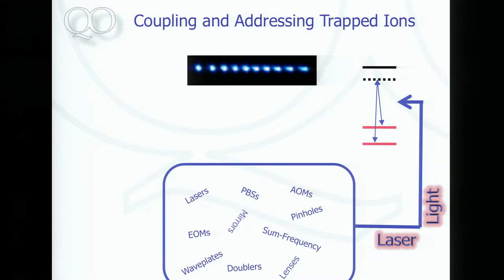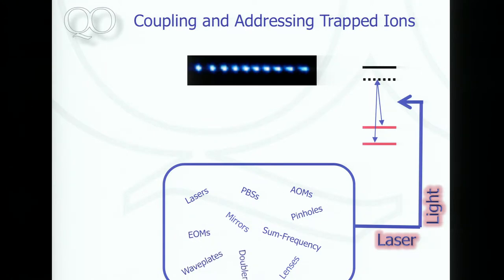All these experiments, or many of these very nice experiments, have been done using laser light. If you have two hyperfine levels, you drive them using a Raman transition instead of driving them directly using radio frequency. This involves lots of optical elements: polarizing beam splitters, acousto-optic modulators, electro-optic modulators, the lasers themselves, frequency doubling, and all kinds of stuff. You use this laser light to drive the qubit.